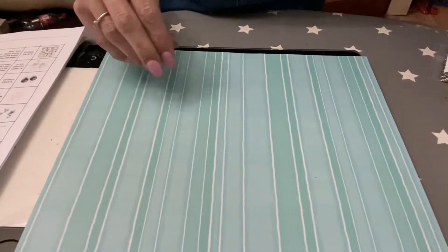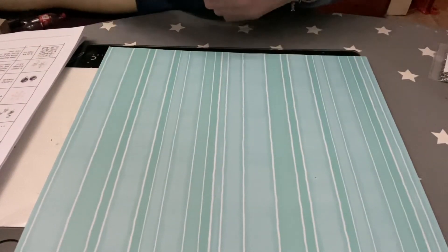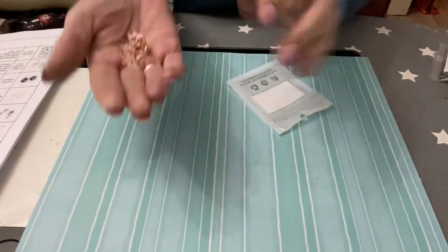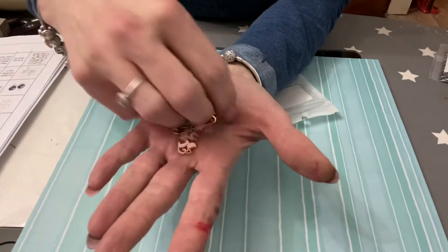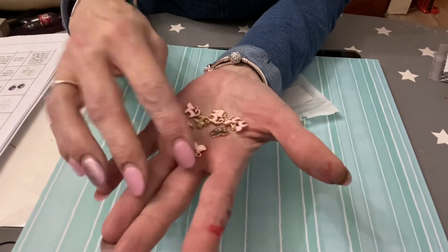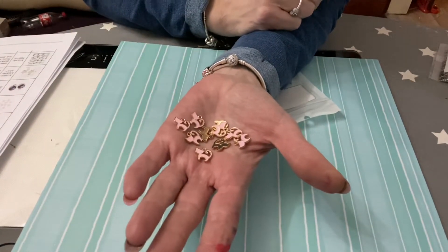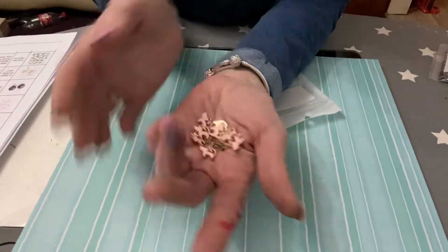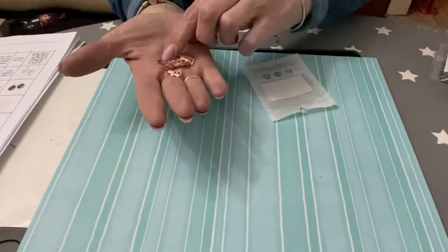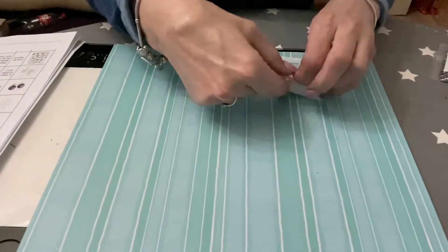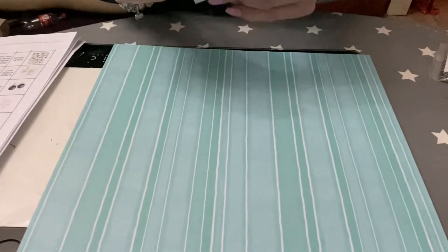Then I have these alloy enamel kitten charms. These are in pink, these are quite sweet. I really like those ones and there's 10 in the packet and they are one pound 25. They're gold in color on the back and they are 12.5mm.